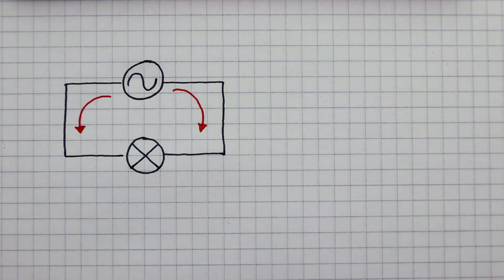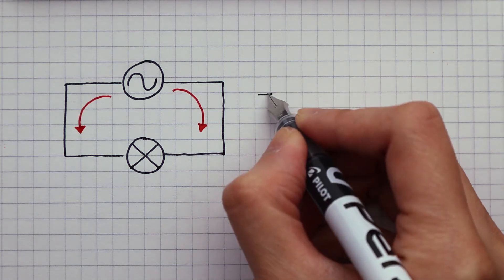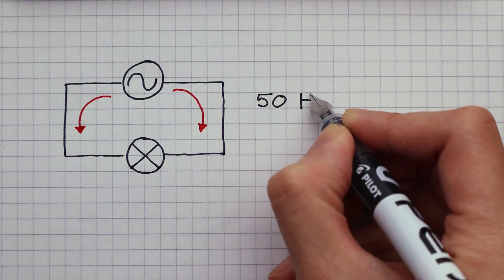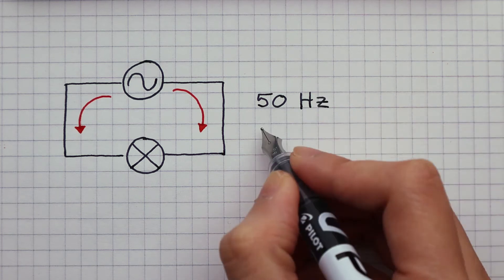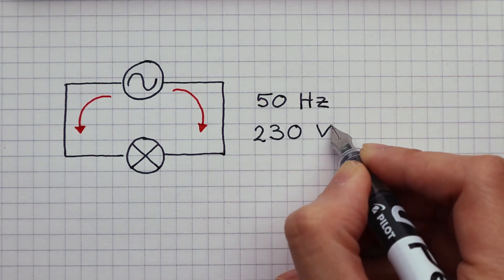In the United Kingdom, the current switches directions 50 times each second. So here in the UK, AC current has a frequency of 50 hertz. It has a maximum voltage of 230 volts.